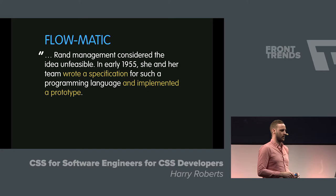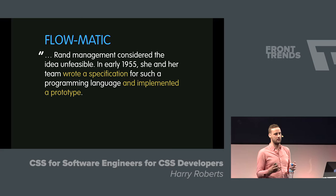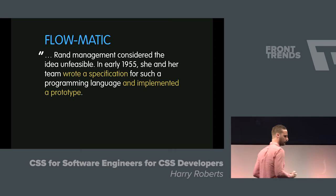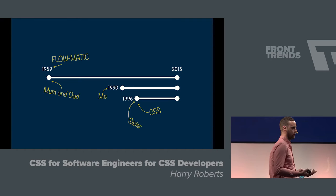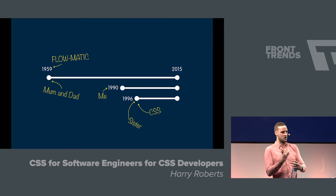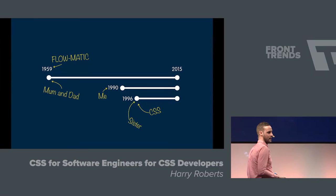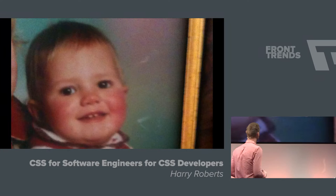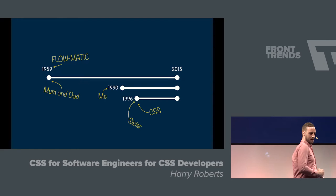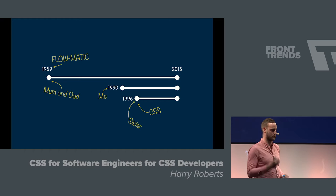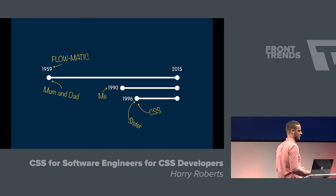Back to this weird professional benchmark — this gives me really good context. Knowing this 1959 kind of timeline gives me a really good personal frame for the work that I do. So in 1959, Flomatic and my parents were born. Modern computer science is about the same age as my parents. In 1990, I came along. And in 1996, my youngest sister and CSS arrived.